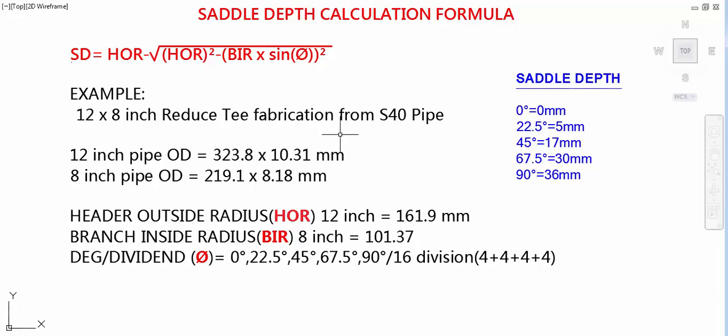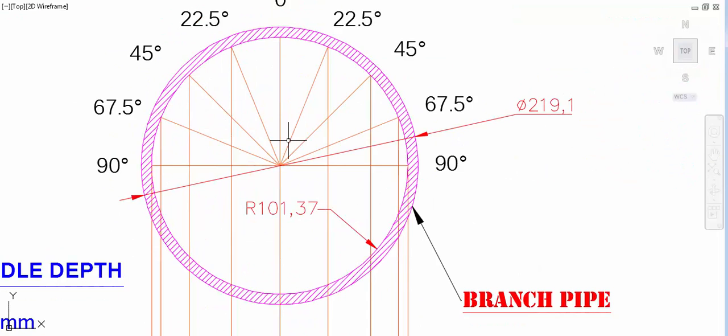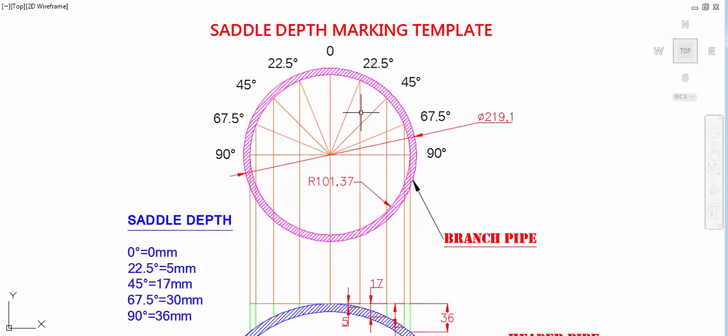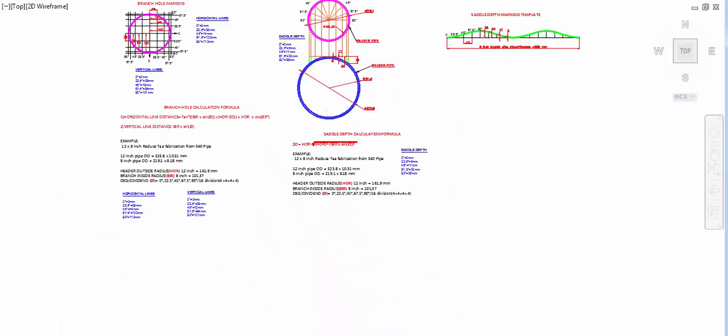So if you calculated one division, it's applicable for other three divisions. So now we will divide as in zero degree, 22.5 degree, 45 degree, 67.5 degree, and 90 degree. Now you have to calculate for all these degrees for saddle depth to apply this formula. You will get this amount of saddle depth.